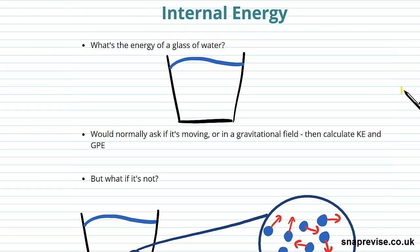So let's start by looking at internal energy. So what is the energy of a glass of water? Now we've talked about energy already, and so we normally ask, well, what's the glass doing? Is it moving? Are we in a gravitational field? And from that we could calculate its kinetic energy and its gravitational potential energy.